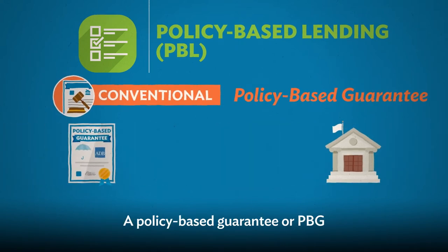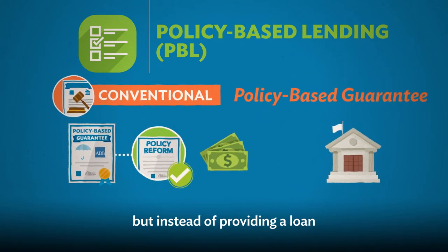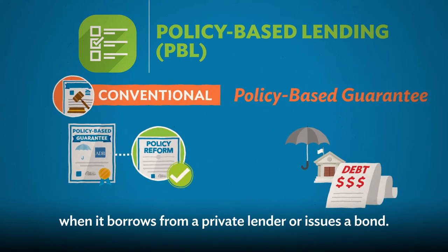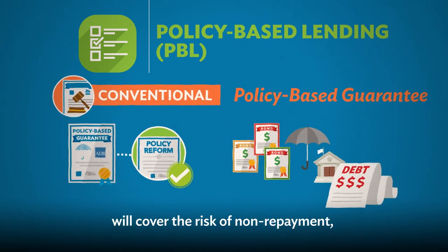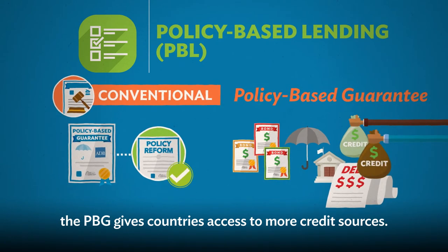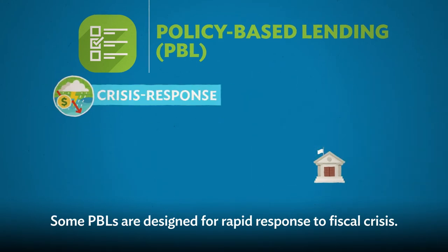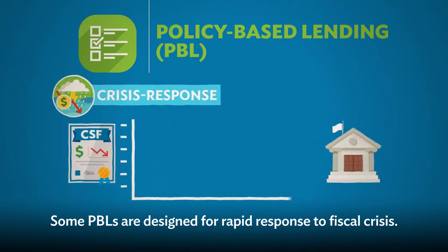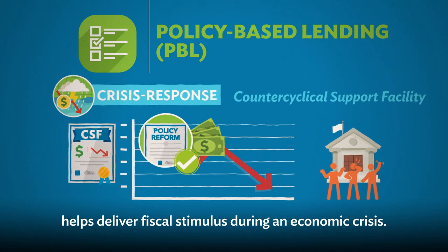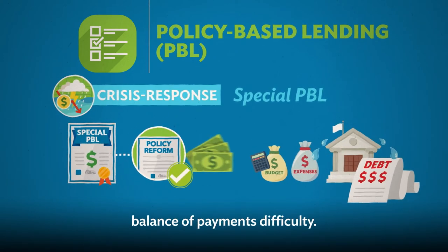A policy-based guarantee, or PBG, is also based on completing policy actions. But instead of providing a loan, ADB partially covers a government's credit risk when it borrows from a private lender or issues a bond. By assuring lenders that ADB will cover the risk of non-repayment, the PBG gives countries access to more credit sources and allows the government to learn best practices in commercial borrowing. Some PBLs are designed for rapid response to fiscal crisis. The Counter Cyclical Support Facility helps deliver fiscal stimulus during an economic crisis, supporting countries facing balance of payments difficulty.